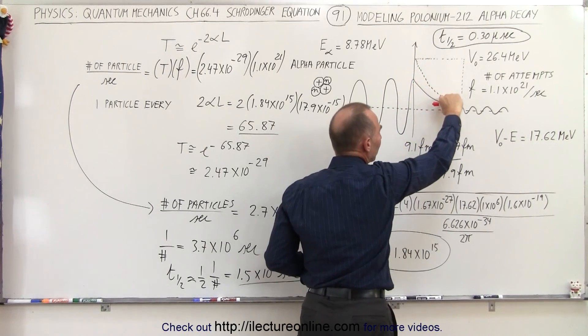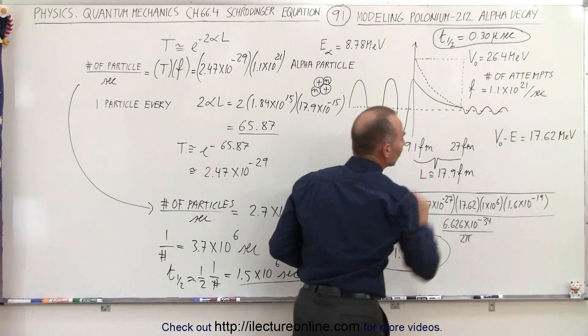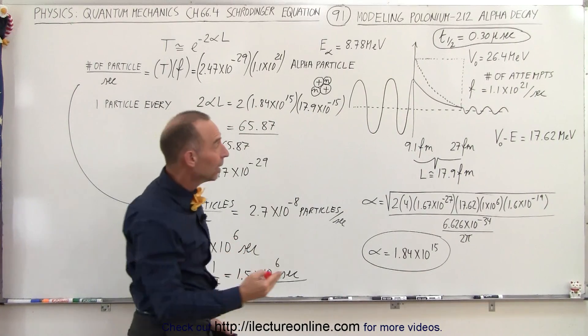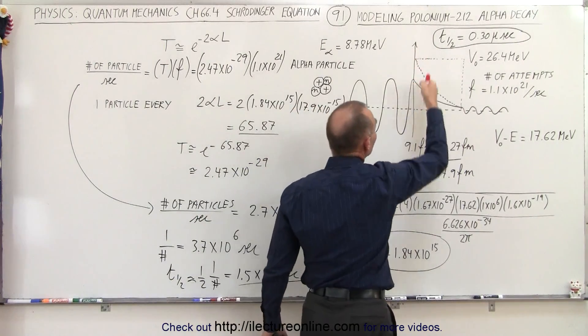The barrier drops off rather quickly, and therefore the alpha would decrease quite a bit as the particle tries to make it through the barrier. So what we're going to do instead is we're going to calculate this again, but instead we're going to divide the barrier up into small sections.